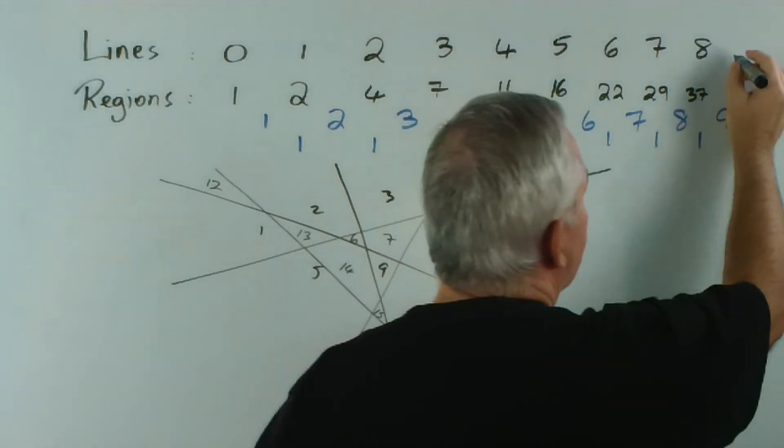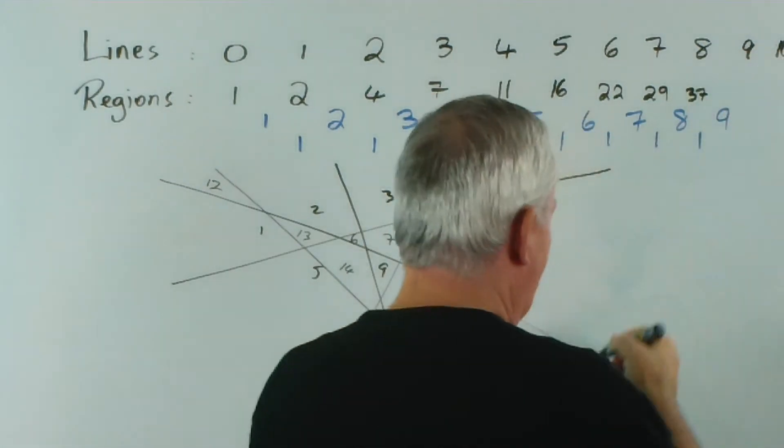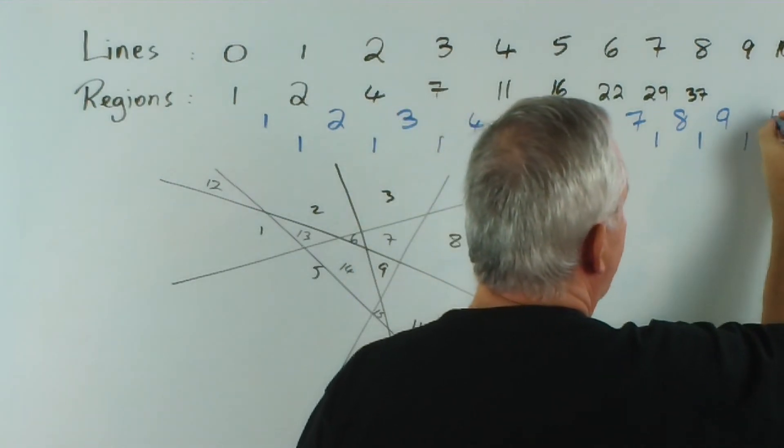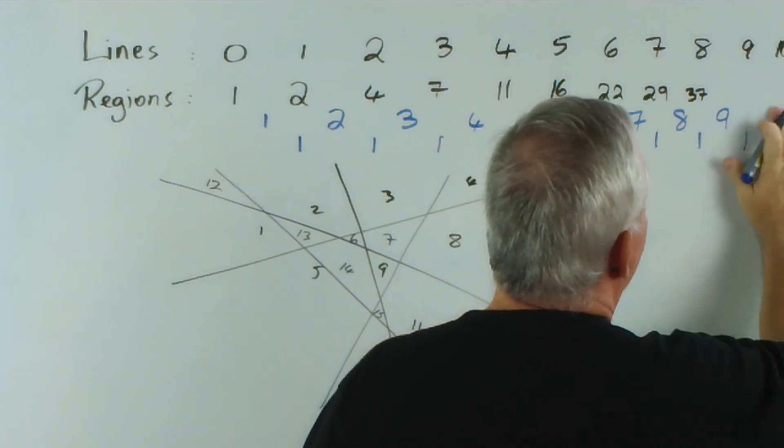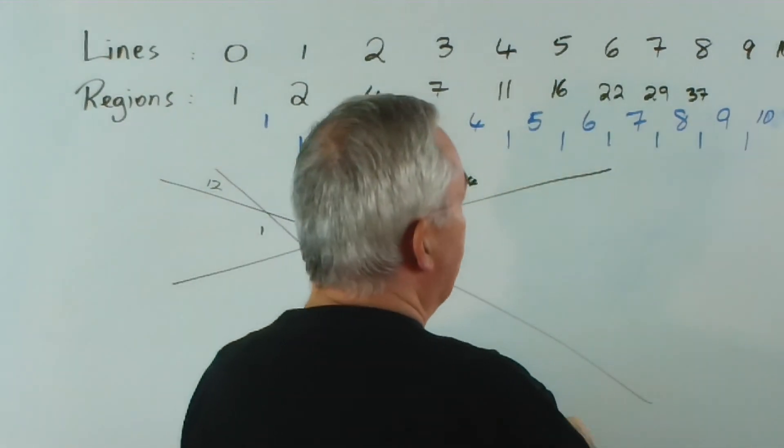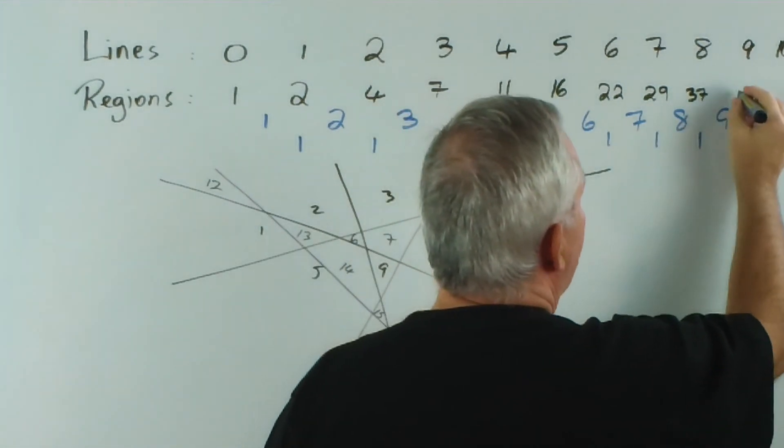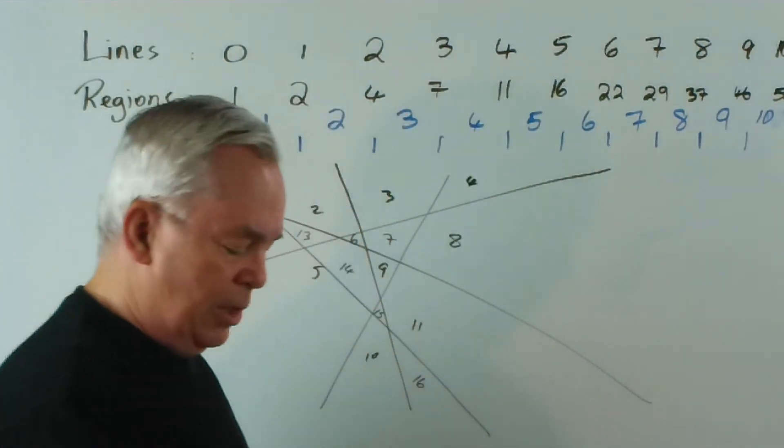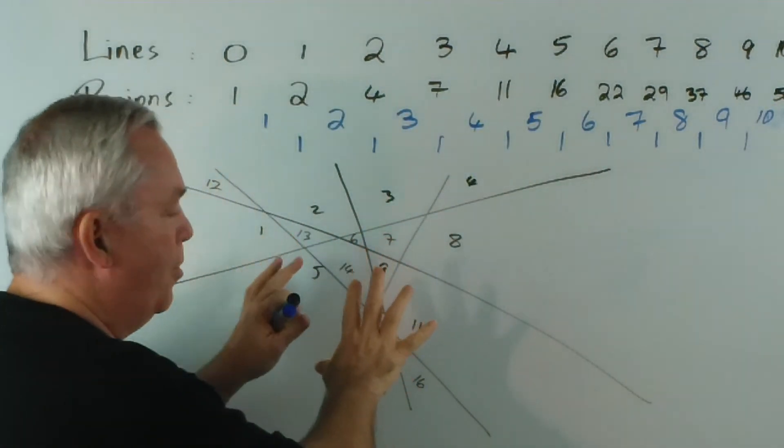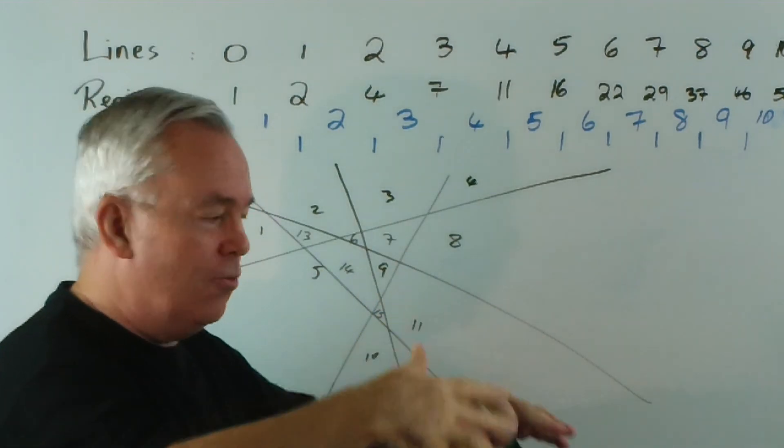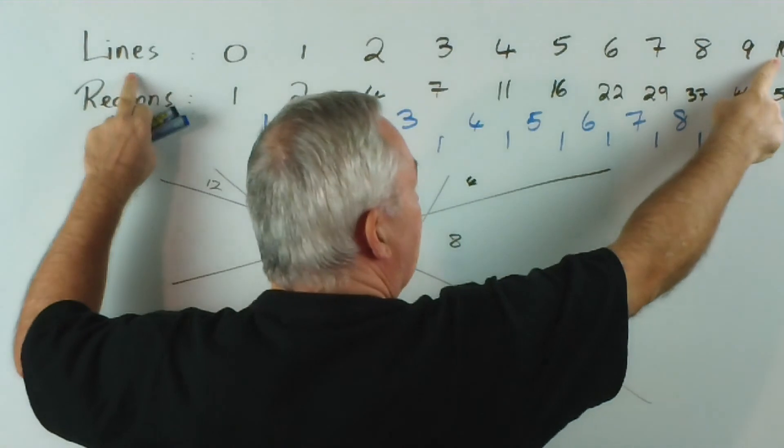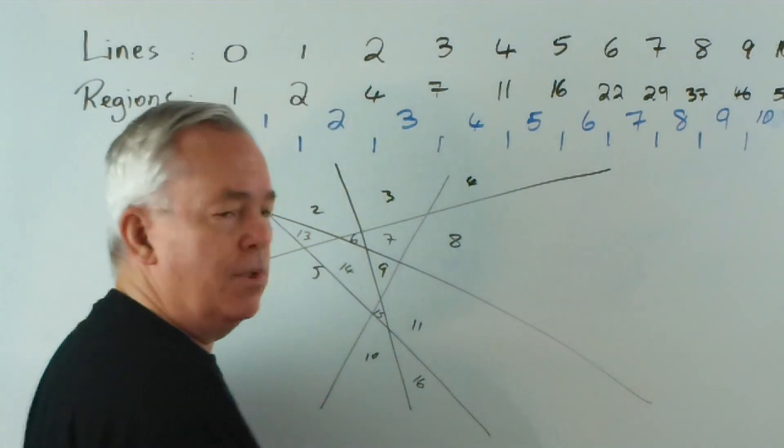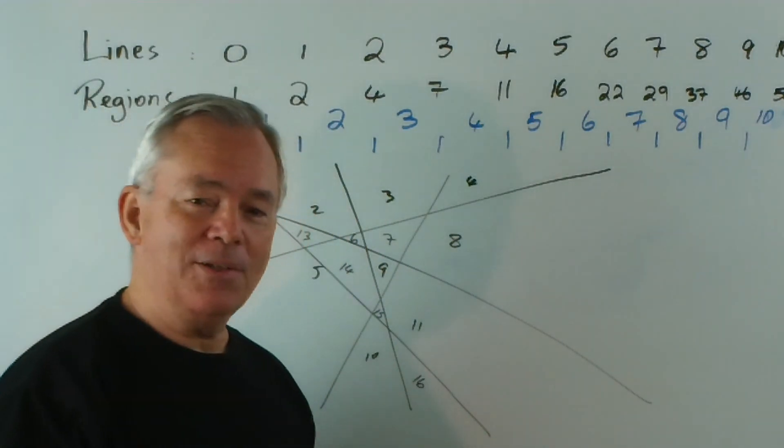We could perhaps just squeeze in 9 and 10. 37 plus 9 would be 46 and 46 plus 10 would be 56. So this predicts that if you had a large enough sheet and were very diligent and drew 10 lines on the paper to maximise the number of regions, you would in fact get 56 regions. If you wish to try that and confirm it, by all means do it.